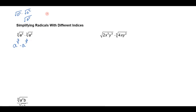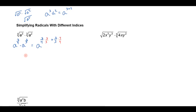Now if I had a cubed times a squared, you know that you'd add those exponents. So that's all I have to do here — I'll just add these exponents. This is going to give me a to the three-fourths plus two-thirds. I left a little room so I could get a common denominator. I'll multiply here by three over three and here by four over four. So this gives me a to the nine plus eight, which is the 17-twelfths power.